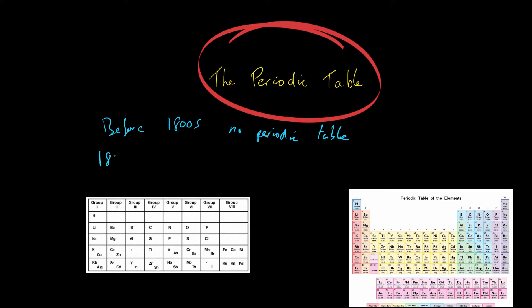In 1808, John Dalton, who was a scientist at the time, published a book in which he grouped all the known elements by their mass. Different masses of different elements had been calculated by various experiments, and he published groups of elements by their mass. The problem was that there was no order to them — loads of different elements lined up in a table with different properties.